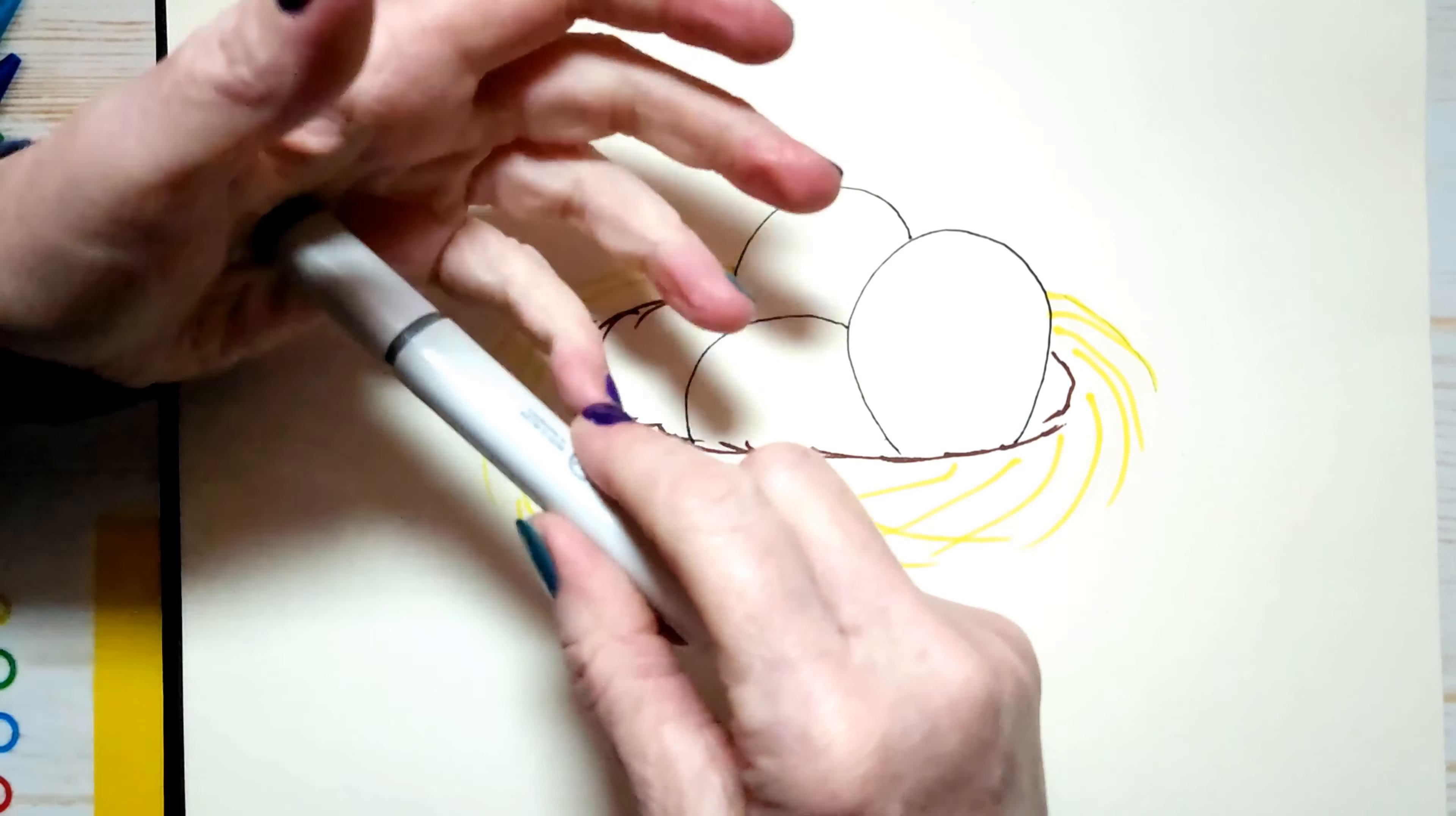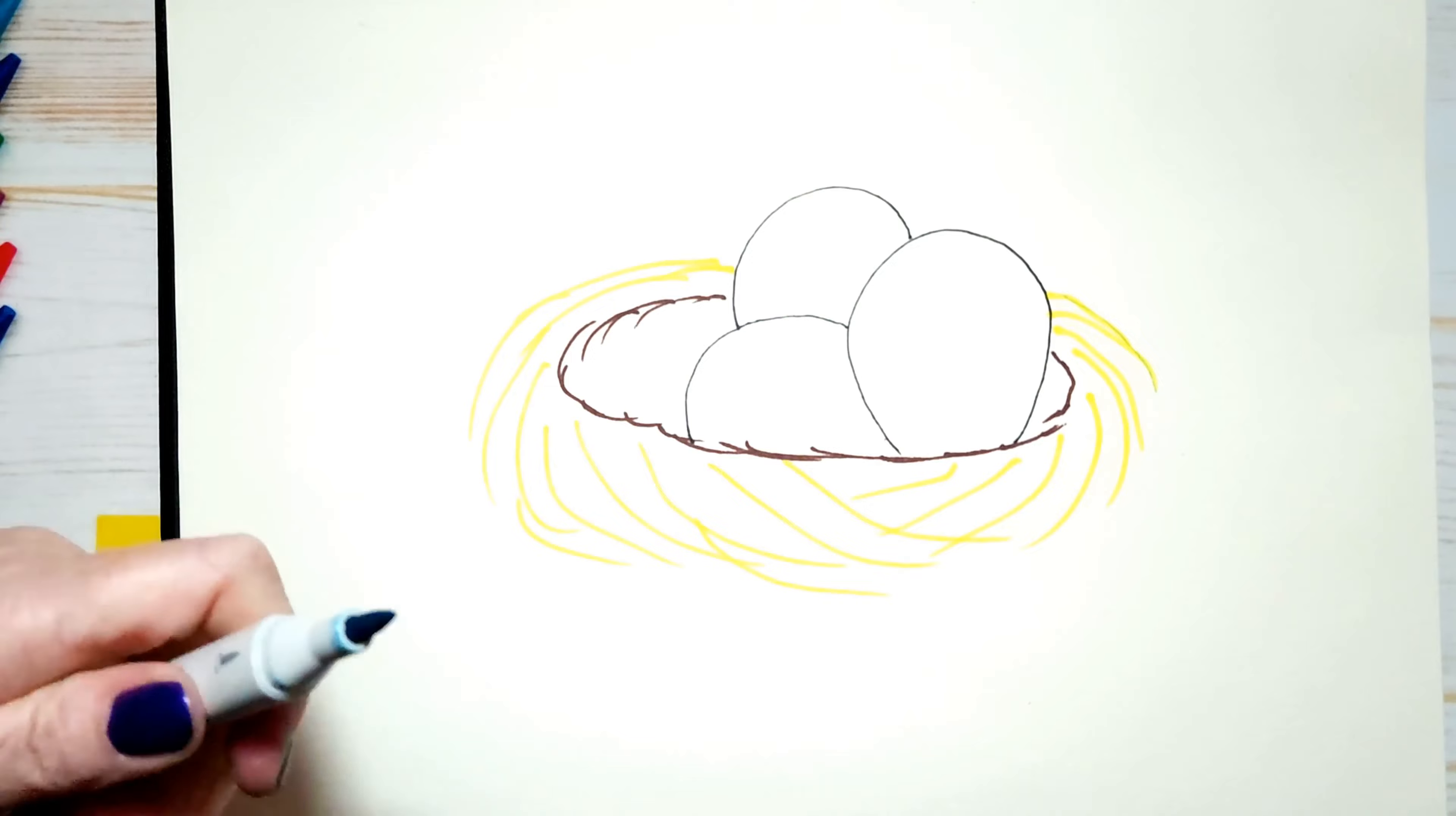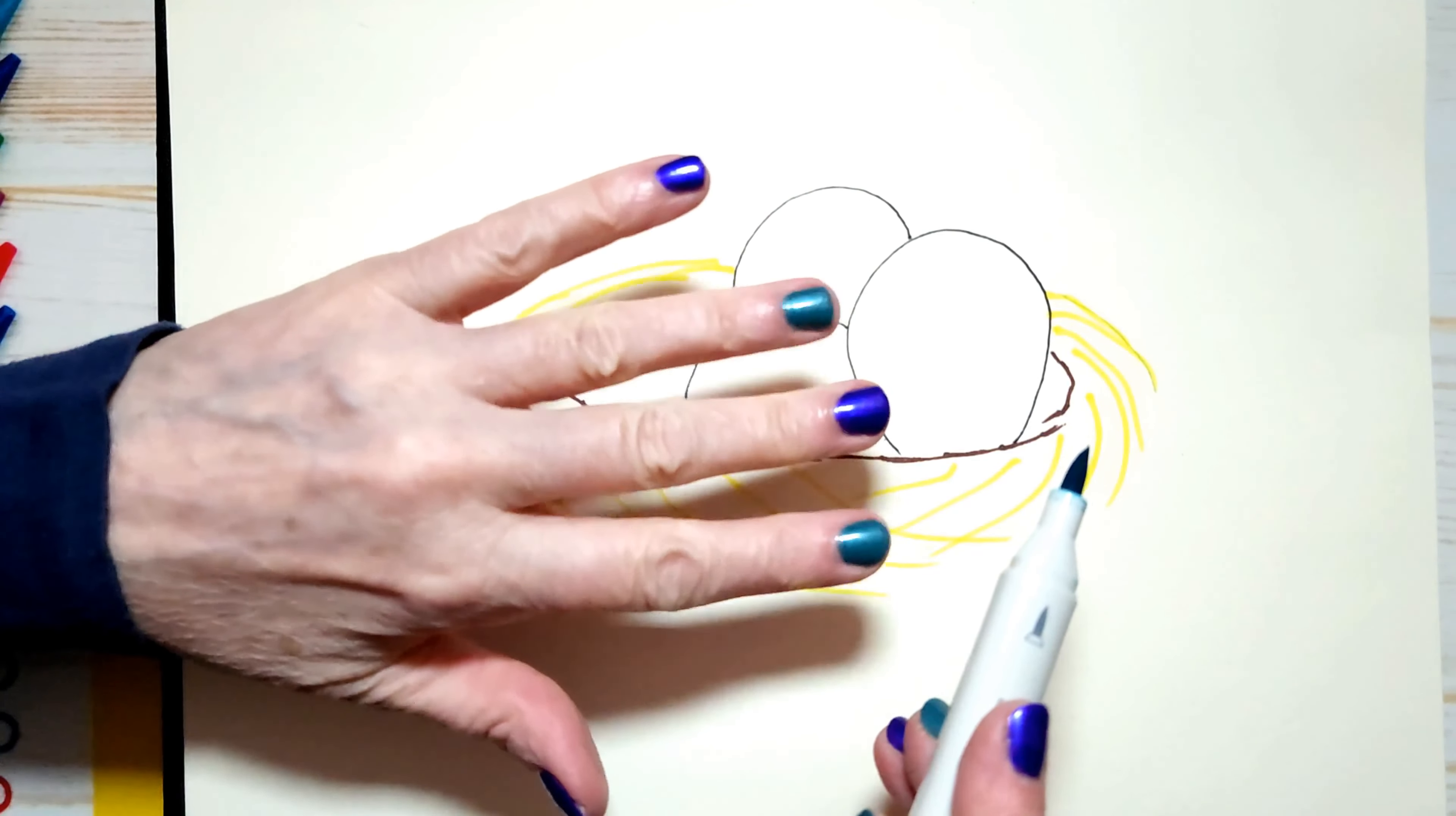Now I have this really neat marker. If I can get the cap off. There we go. And I got it on me already. Actually, look, it matches my nail polish. I have purple and blue today.